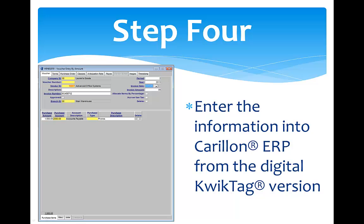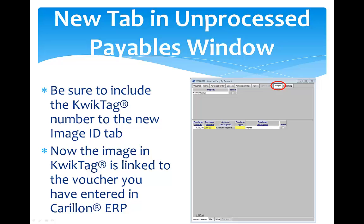When you are ready, within QuickTag, pull up the correct document from the Unprocessed Payables folder and enter the information into Carillon ERP just like you would from a paper voucher. Make sure you add the QuickTag number to the New Image ID tab. Now just save the voucher, and the document image in QuickTag is linked to the information you have entered into Carillon.